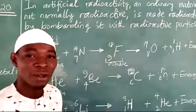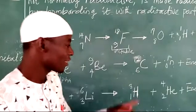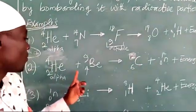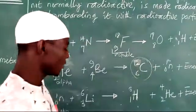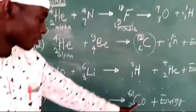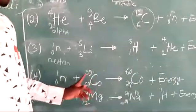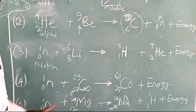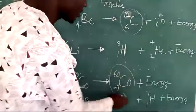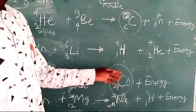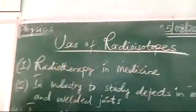The isotopes that are formed in artificial radioactivity are referred to as radioisotopes — such as carbon-12 formed by bombarding a beryllium atom with an alpha particle. This is a radioisotope. Similarly, cobalt-60 was formed by bombarding cobalt-59 with a neutron, and cobalt-60 is actually a radioisotope. These radioisotopes have many applications, summarized here as uses of radioisotopes.